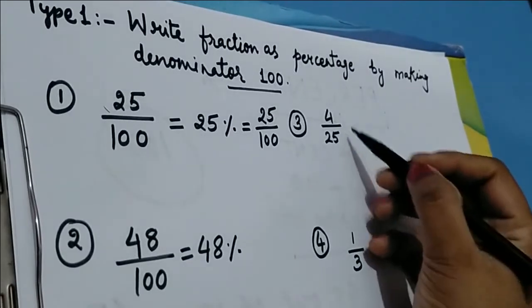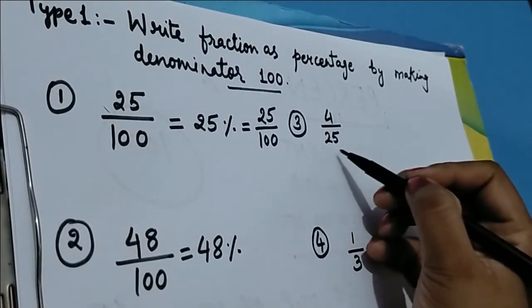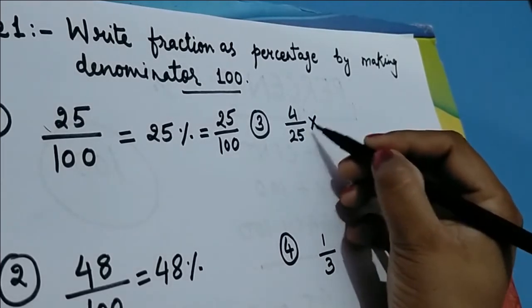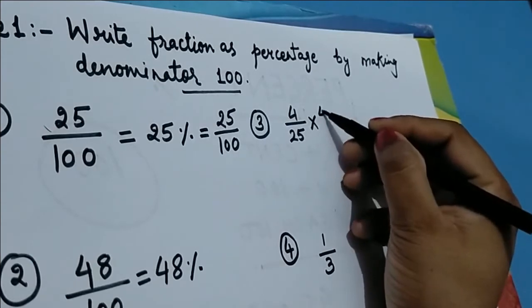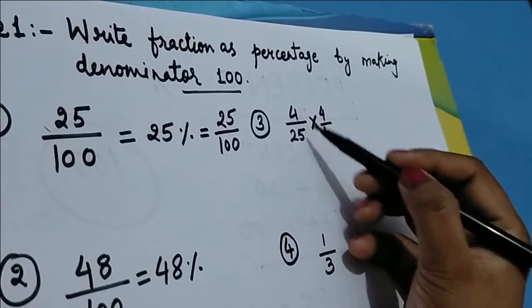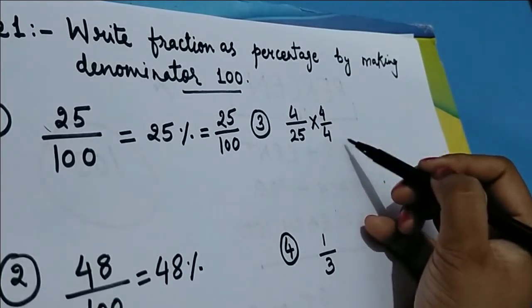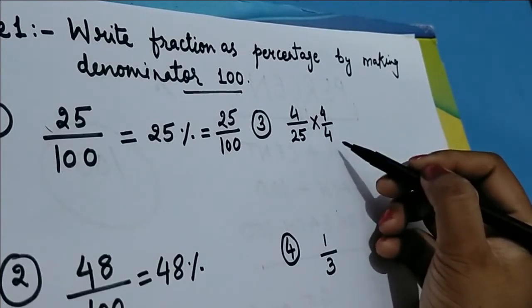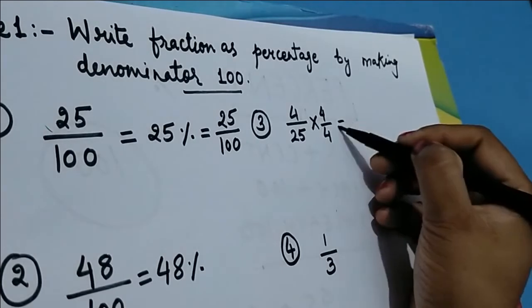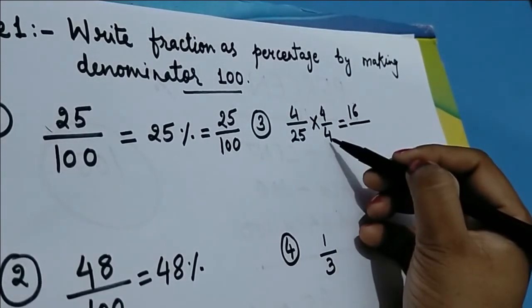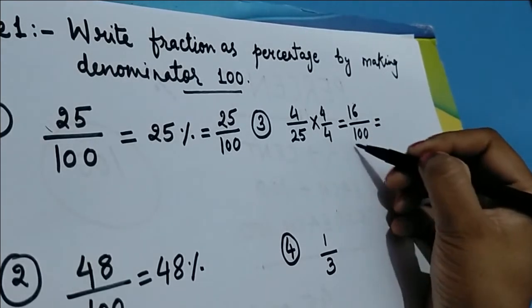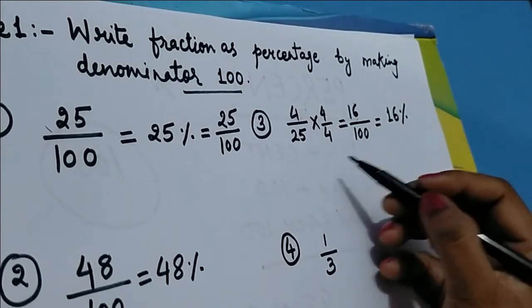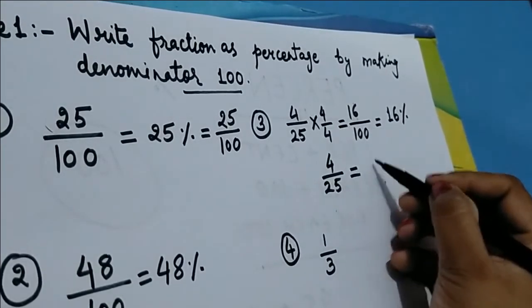Let's take another example: 4/25. Here the denominator is not 100, so we multiply both numerator and denominator by 4. Always remember, whatever we multiply in the denominator, we must multiply the same number in the numerator. So 25 × 4 = 100 and 4 × 4 = 16. Now we can write 16/100, which equals 16 percent.